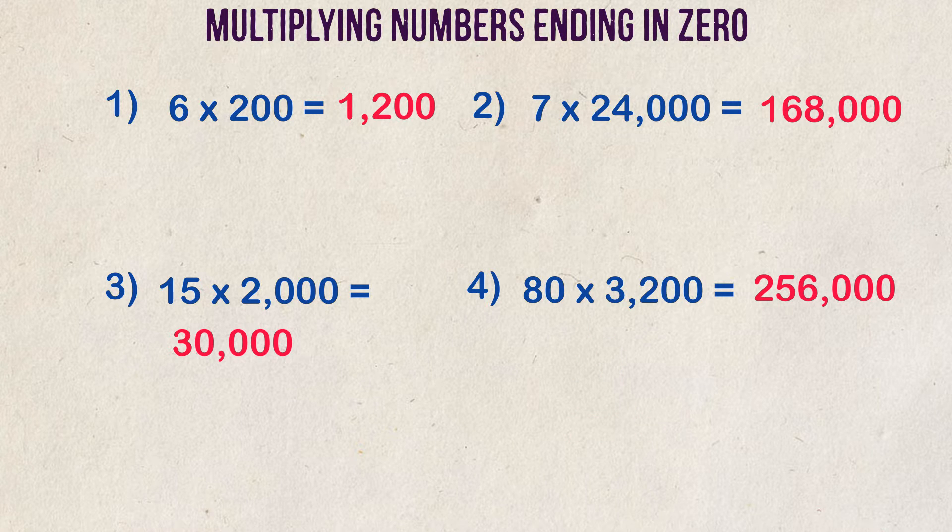So you can see how easy it is to multiply numbers ending in zero when you break it down to two different steps. Multiply the non-zero numbers first, then add the total number of zeros at the end.